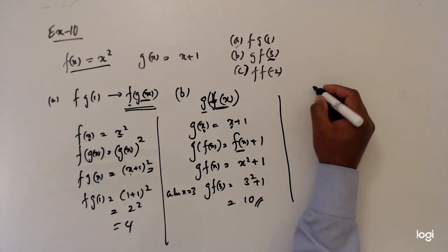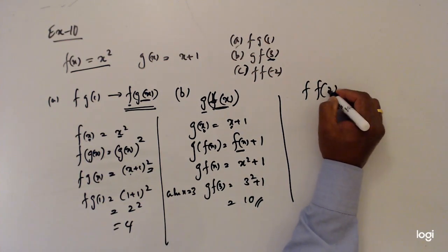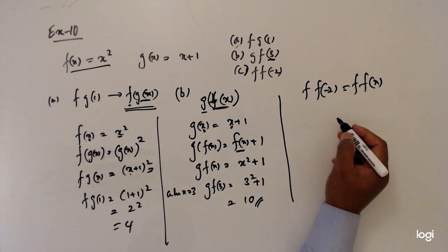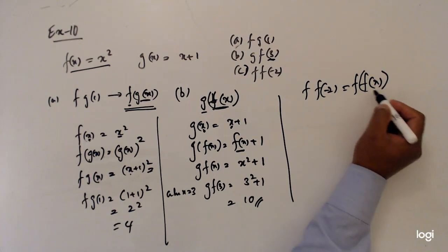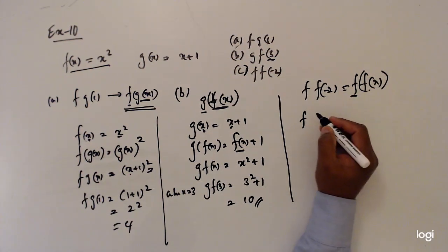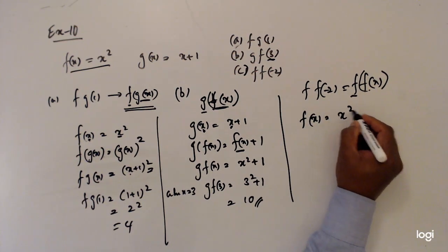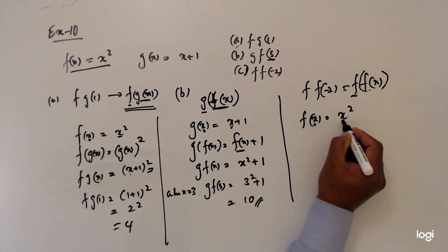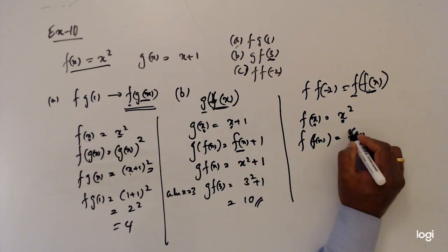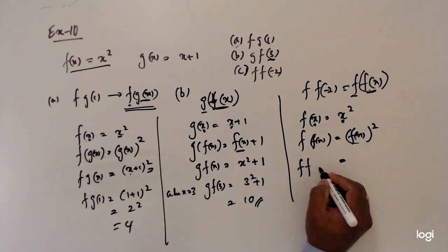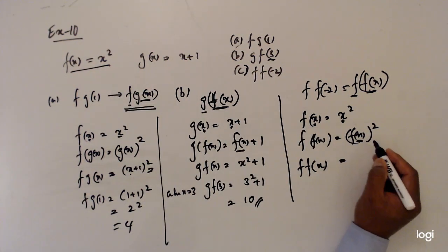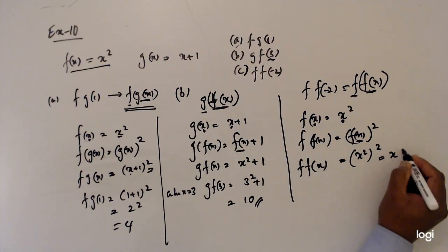For part c, ff(-2). We want to find ff(x). f(x) is the variable of f. I write f first: f(x) equals x squared. Now instead of x I put f(x), so f(f(x)) equals f(x) squared. What is f(x)? f(x) is x squared, so f(x) squared equals x squared all squared, which is x to the power 4.